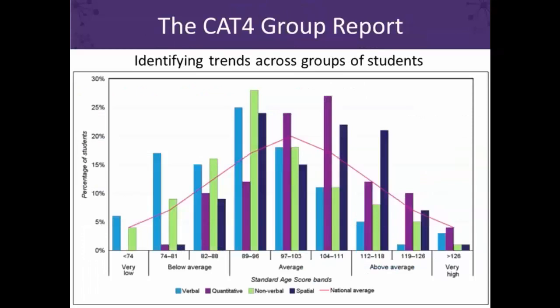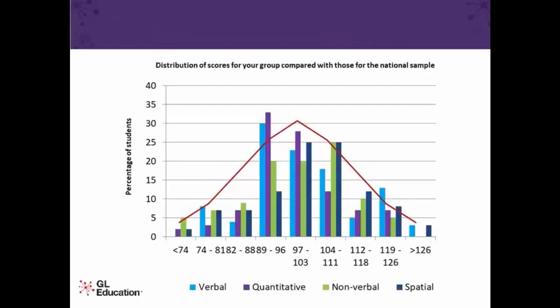Going back to CAT4, here is an example of a comparative bar chart from the group report. When we zoom out, we get to look at trends across groups of students and get that top-level view. The red curve is the UK standardisation bell curve. The light blue bars are the verbal reasoning scores across this group, and we can see they are ever so slightly to the left — a slight left skew — meaning maybe we have a cohort with a number of EAL students, and we should be thinking about what literacy programmes are in place. Do we have a literacy intervention programme, an intensive English language programme? Do we need to be embedding literacy across the curriculum?